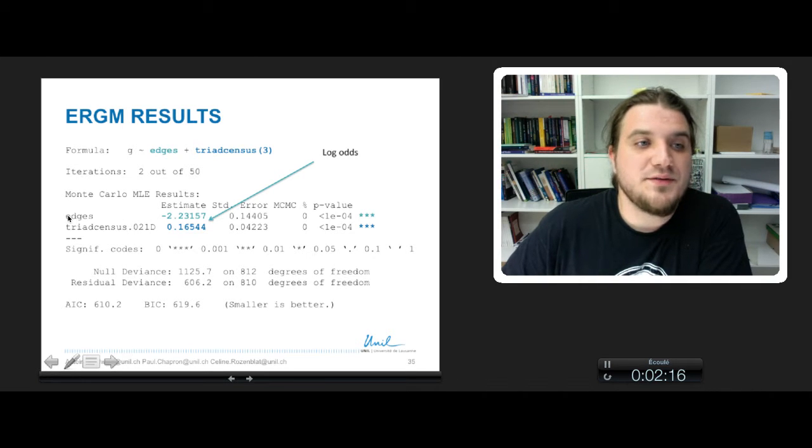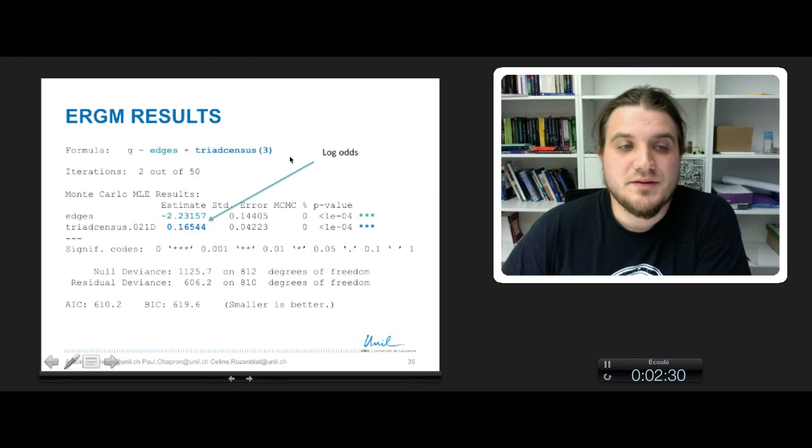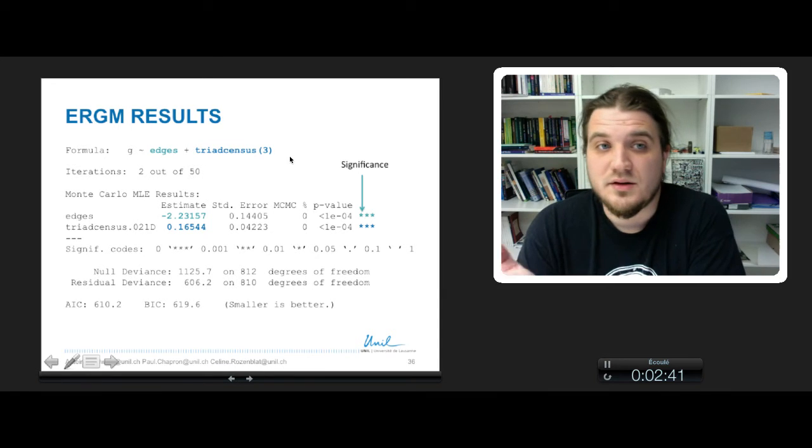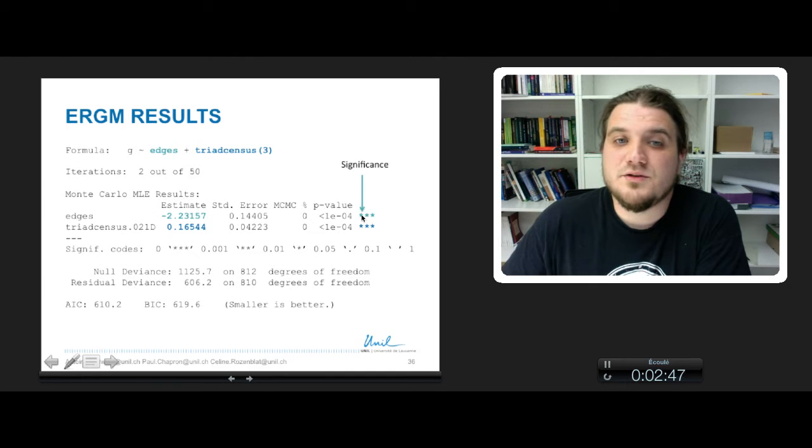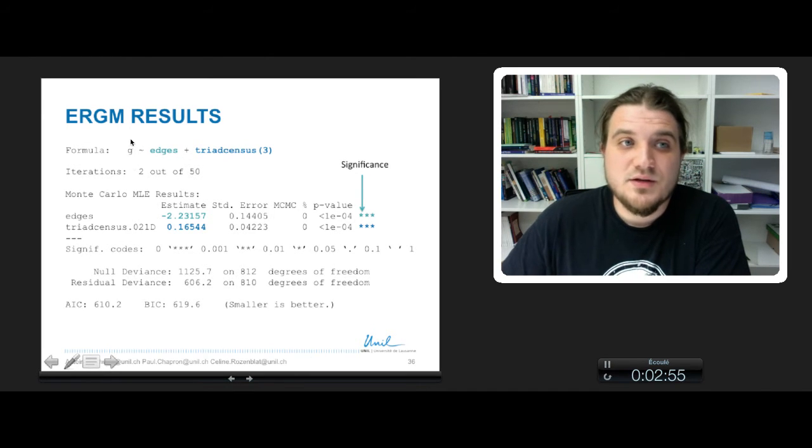We have these results. The parameter of edges is minus 2.2, and the parameter for triad census of kind 021D is 0.16. These are the log-odds of the parameter values. Another important result to check is the significance of these estimates. Here it's a simple model, and we have found two significant parameter values because of the z-score and very low p-value under the null hypothesis, where these terms do not affect the structure of G at all.